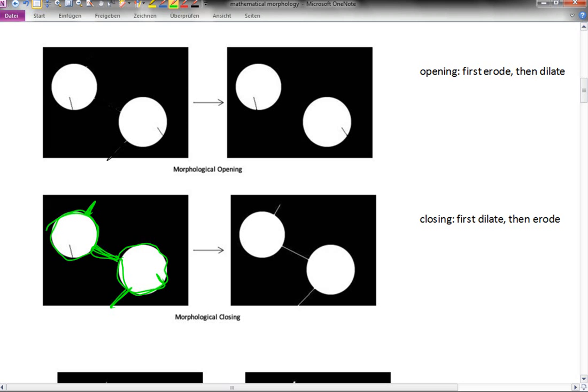This is the intermediate result after dilation. If you now erode this, then everything that has become broader becomes slimmer again. But the things which have disappeared, nobody can bring back. You see here the result of first a dilation, then an erosion.